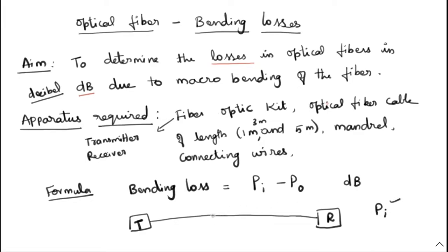Then, using the mandrel, we make bends in the optical fiber. After making the bends we measure the output power, P out. Without bending we take the input power value. Then we make three turns: after the first turn we record the output, after the second turn we record the output, and after the third turn we record the output.